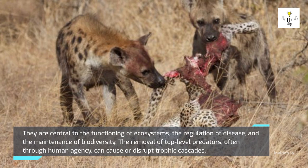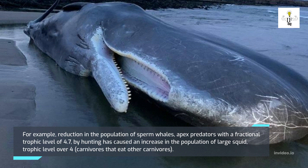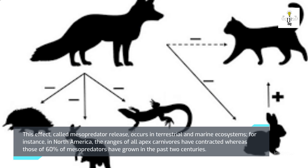The removal of top-level predators, often through human agency, can cause or disrupt trophic cascades. For example, reduction in the population of sperm whales — apex predators with a fractional trophic level of 4.7 — by hunting caused an increase in large squid populations. This effect, called mesopredator release, occurs in terrestrial and marine ecosystems. In North America, the ranges of all apex carnivores have contracted, whereas those of 60 percent of mesopredators have grown in the past two centuries.